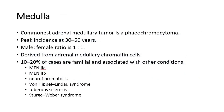Adrenal glands are divided into cortex and medulla. For the medulla, the commonest adrenal medullary tumor is a pheochromocytoma. Peak incidence is at 30 to 50 years, with a male to female ratio of 1 to 1. It is derived from adrenal medullary chromaffin cells. 10 to 20% of cases are familial and associated with other conditions, such as MEN2A, MEN2B, neurofibromatosis, von Hippel-Lindau syndrome, tuberous sclerosis, and Sturge-Weber syndrome.